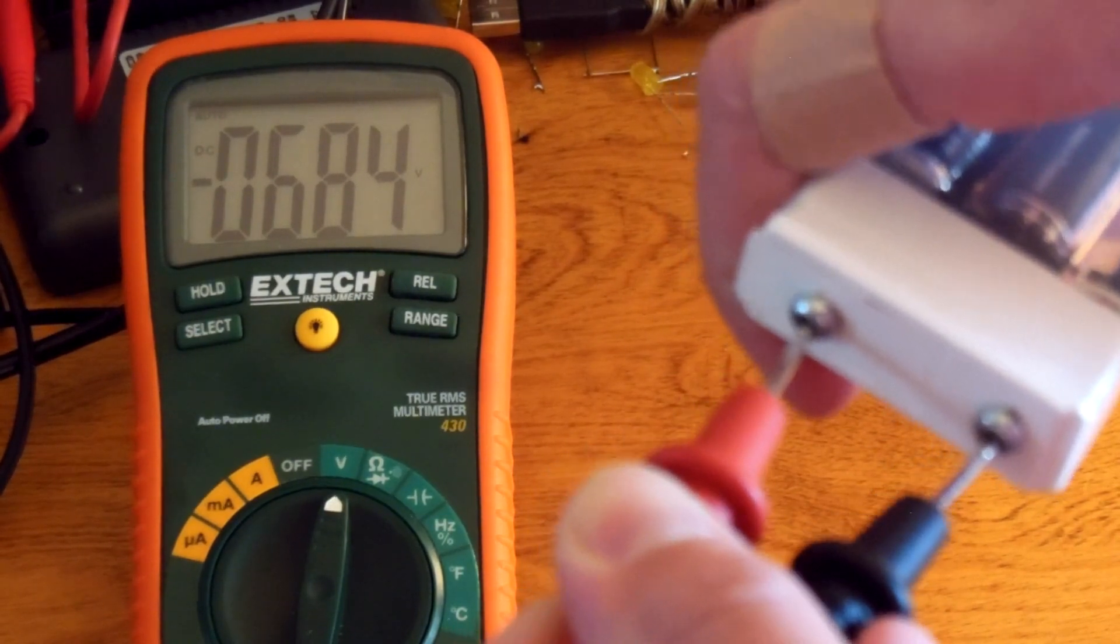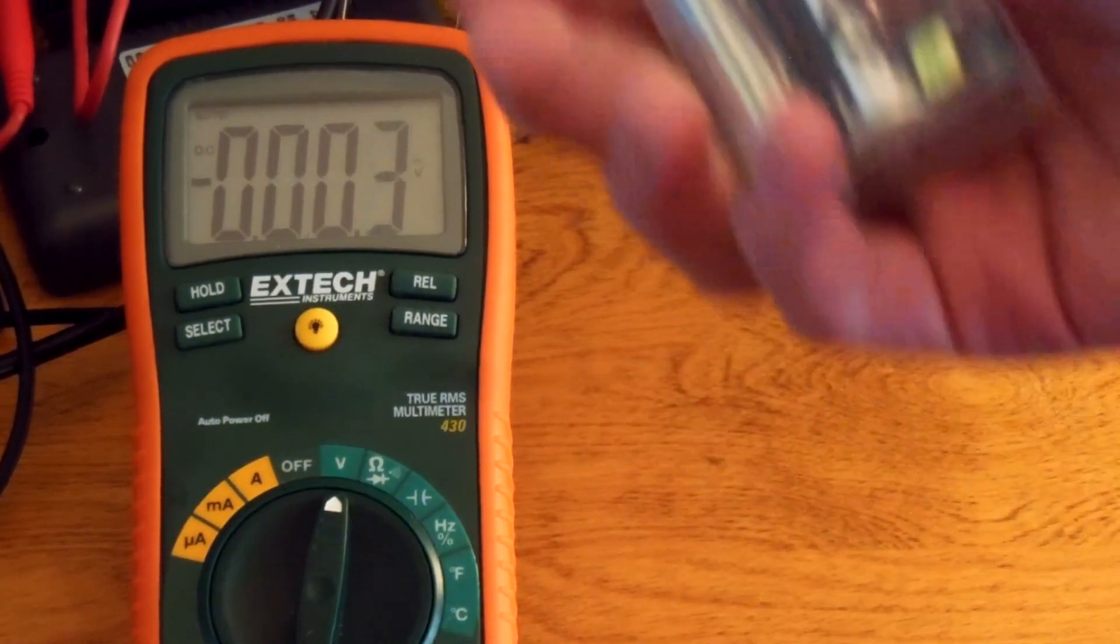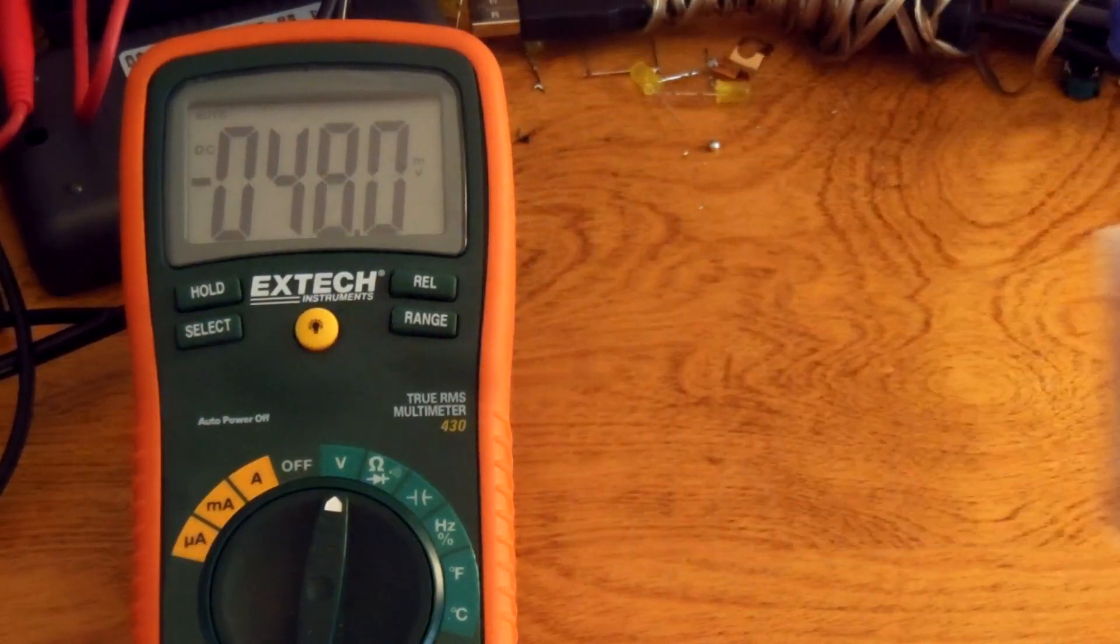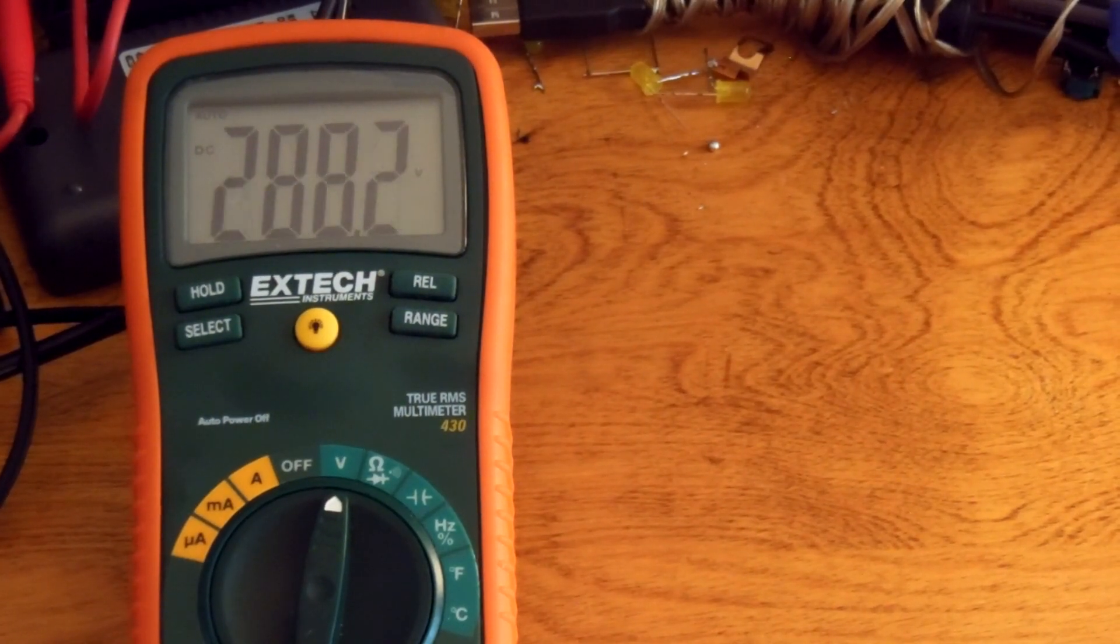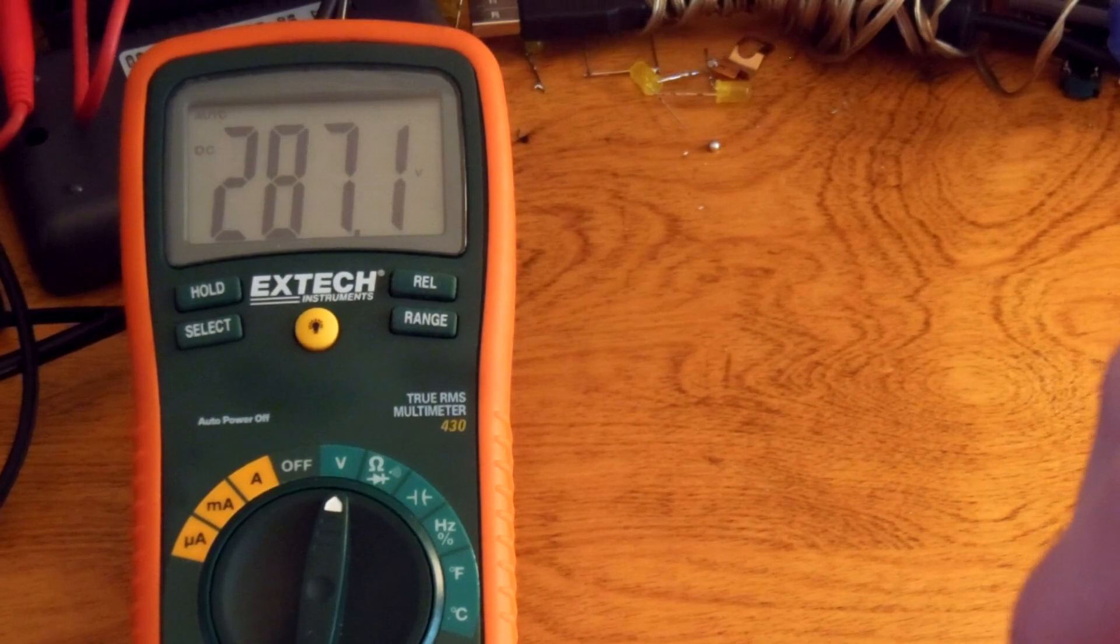Right now we're getting 685 volts, and these aren't new batteries, so that's right where I would expect. Just for reference, this is the old Tic Tac Taser, and we're getting 287 volts.